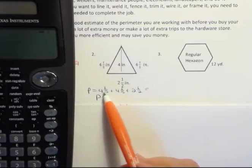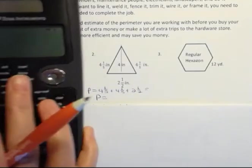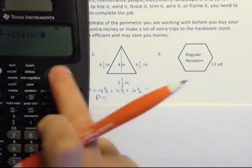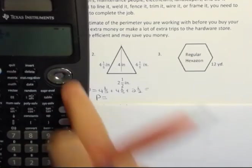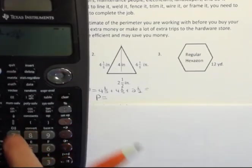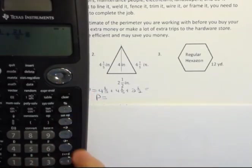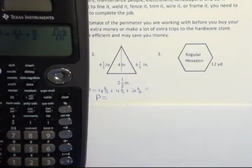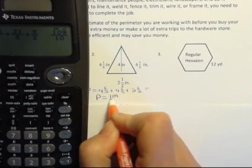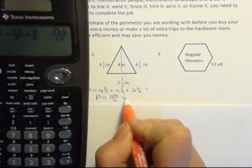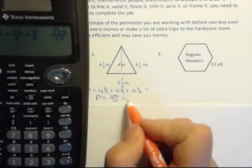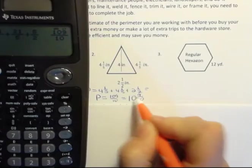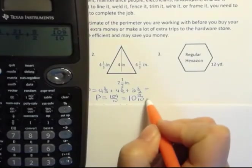If you know how to use your calculator that's not a problem. I can enter this as a mixed number. Do you see how 4×5 is 20 + 1 is 21 fifths? So I'm going to say 21/5 + another 21/5. And then I have 2×2 is 4 + 1 is 5, so 5 halves. And that gives me 109/10. I can change that to a mixed number if I want or I can leave it as improper depending on what my instructor would ask me to do. But 10 goes into 109 ten times with 9 left over. So that's another way you could put that back into this format. And then it's still going to be inches.